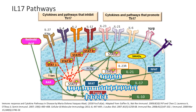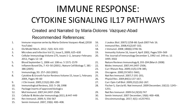Likewise, IL-2 not only inhibits STAT3 via STAT5, but also produces a T regulatory cell phenotype rather than TH17. There are many different pathways associated with the TH17 phenotype. Even though interleukin-17 does not signal through the JAK-STAT pathways, the production of IL-17 is dependent on the JAK-STAT pathways. Thank you for listening!